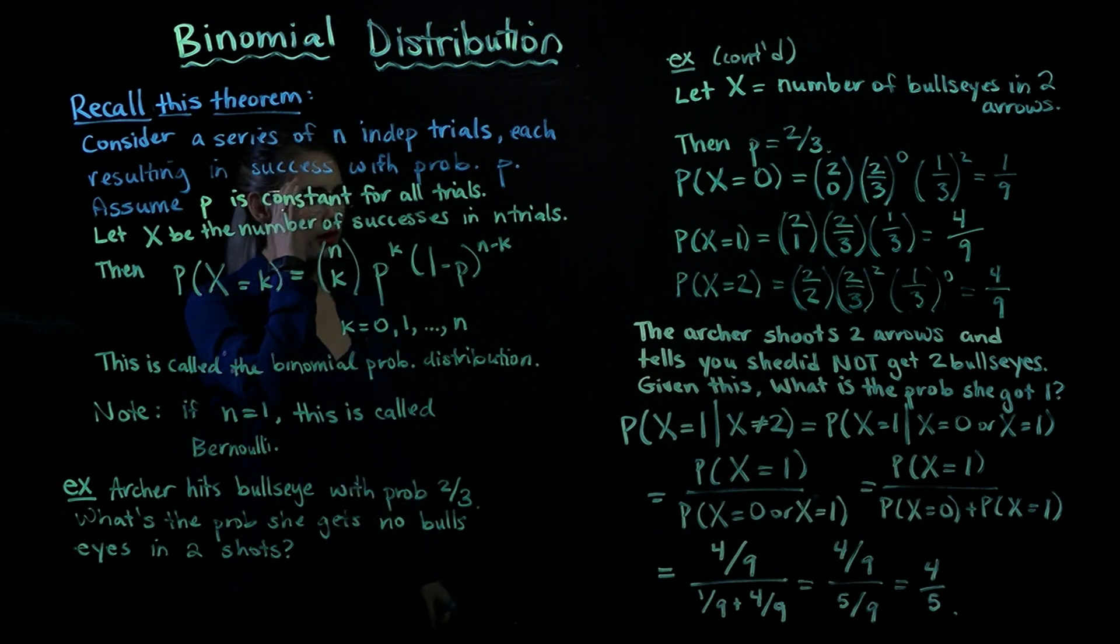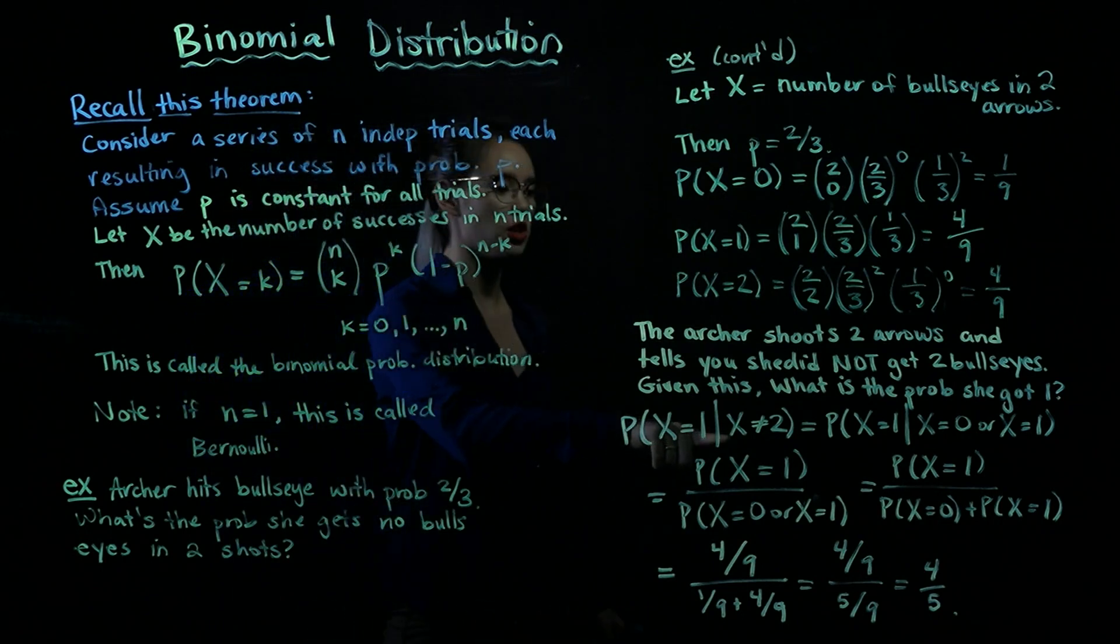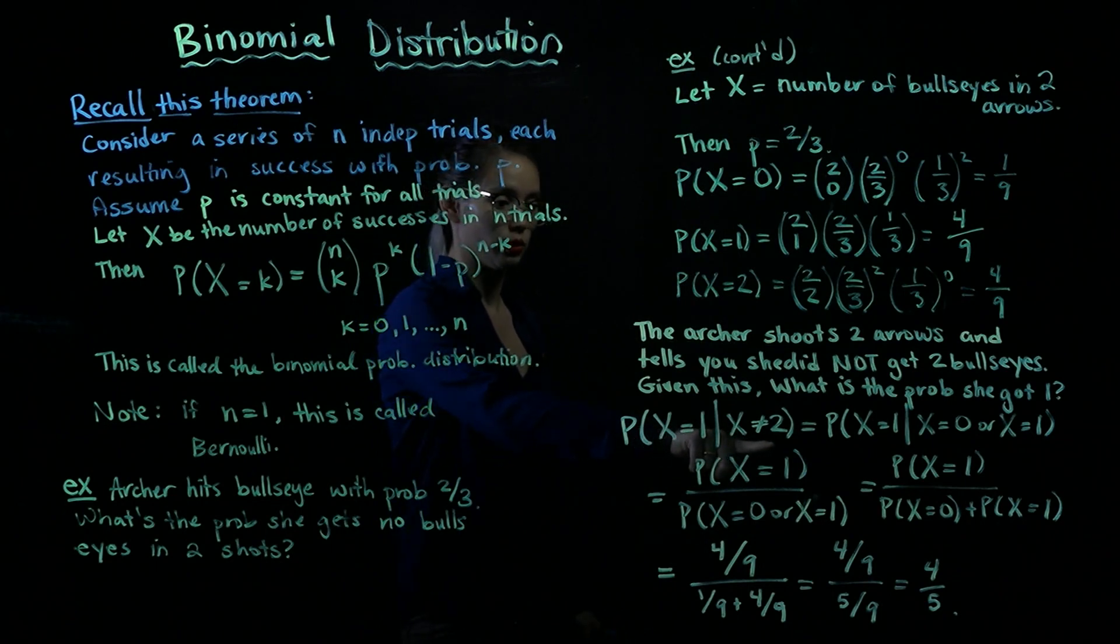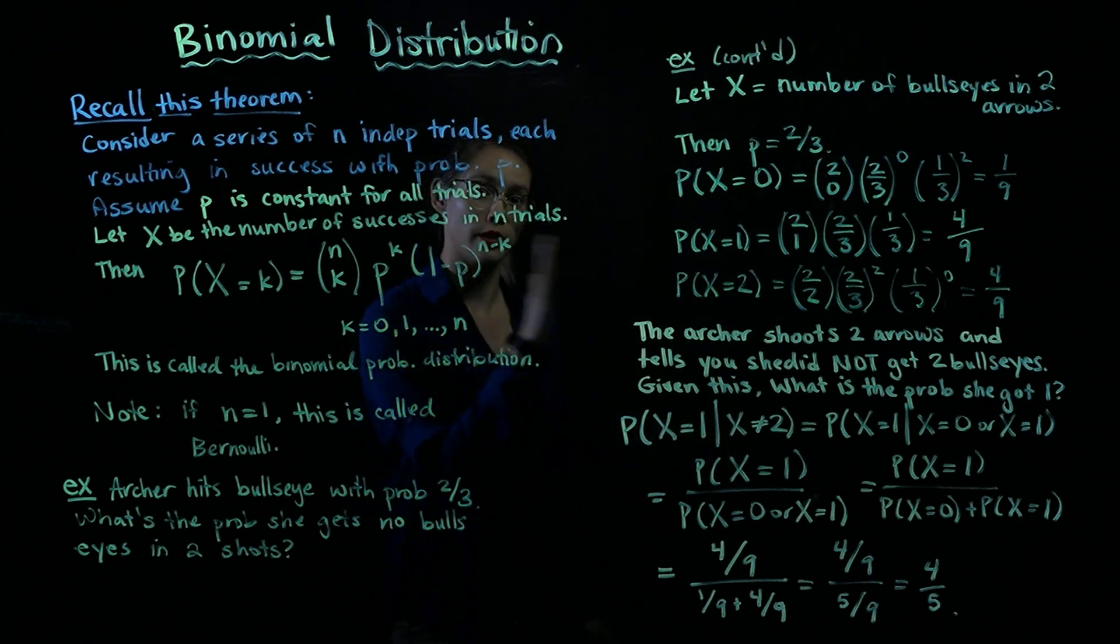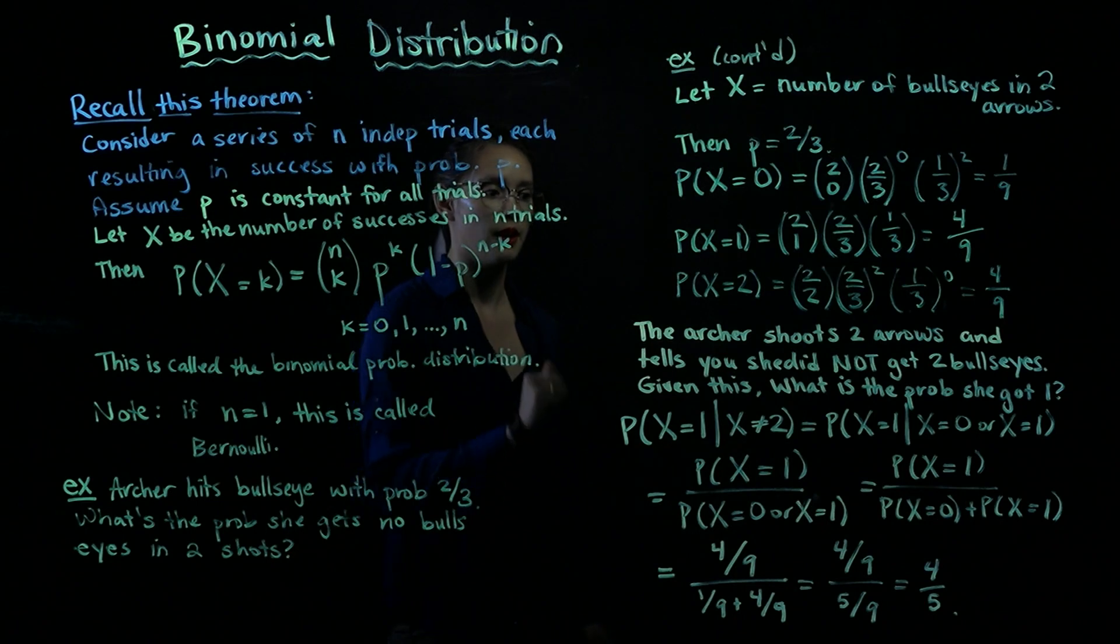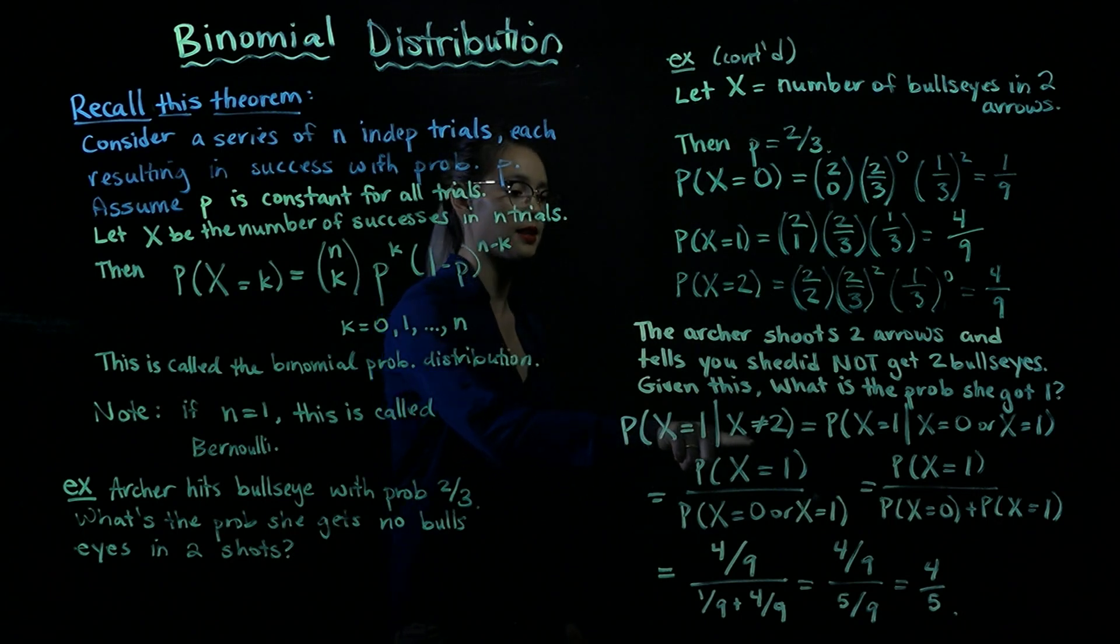All right, so in other words, conditional probability, we're conditioning on the information that she did not get two. So x is not equal to 2 is on the right-hand side of our bar. And we're wondering, what's the probability that she got one? So we have probability x equals one, given x is not two.